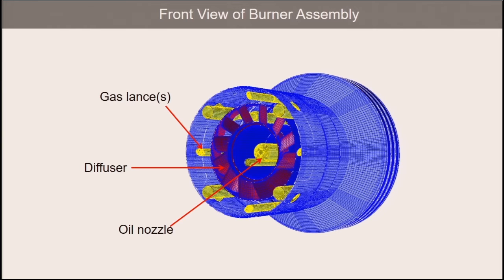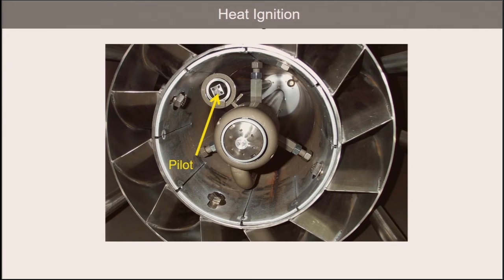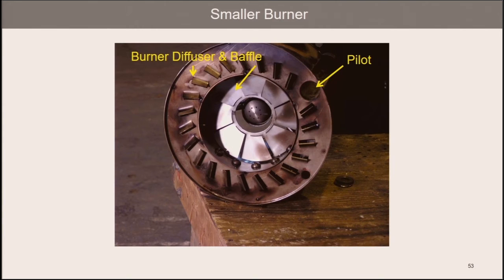We have fuel, air, and turbulence — now we need heat to combust the mix. That comes from the pilot, pictured on the screen, which is lit by an electric spark initially and then stays lit through the main proving sequence, where the flame scanner proves the main flame is stable. Here's another example of a smaller burner that uses both a diffuser and a baffle plate for inducing turbulence for mixing the fuel and air, with the pilot also shown for igniting the mix.